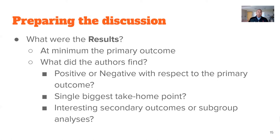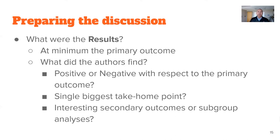Then the important thing is: what are the results? At minimum, you've got to talk about the primary outcome — what did the authors find? Was it a positive or negative trial with respect to the primary outcome? What's the biggest take-home point — if you could encapsulate this entire study, what's that one pearl? And then discuss interesting secondary outcomes or subgroup analyses. These are always interesting because subgroup analyses and secondary outcomes drive more hypotheses; they don't necessarily let us make definitive decisions about future practice.